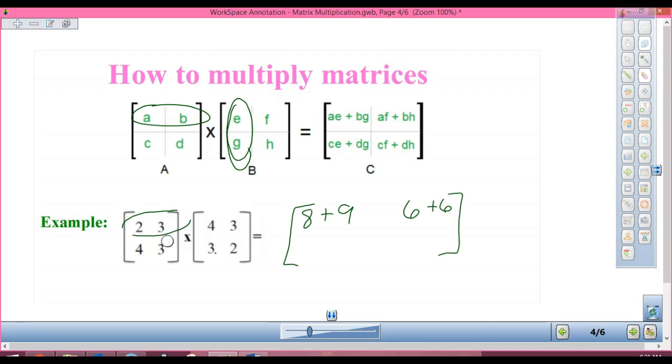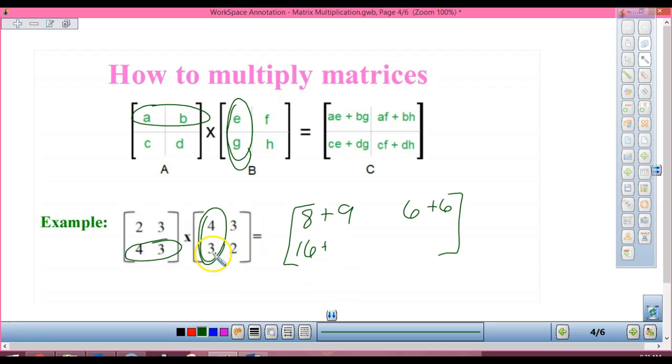Okay, so now this spot right here is bottom row, first column. First numbers, I get 16. Plus second numbers, nine. And then this spot, bottom row, second column. So first numbers, 12, plus second numbers, six.